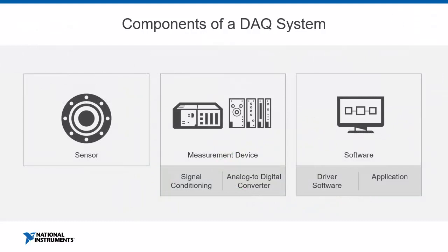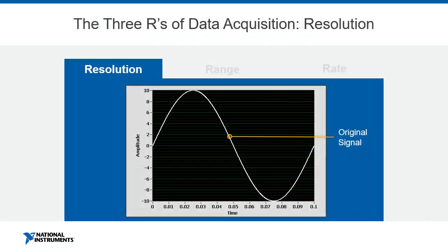Now that we've properly conditioned our signal, the next step is to convert it into a form that a computer can understand using an analog-to-digital converter, or ADC. Let's talk about the specifications of a DAQ device and how they affect what your signal looks like once digitized. We'll discuss the three R's of data acquisition: resolution, range, and rate — the big three considerations when digitizing a signal.